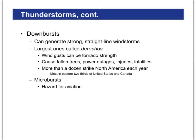A derecho — which I believe is a Spanish word referring to a straight line — is a line of thunderclouds that drop rain all at once. We have things called downbursts, where as all this rain drops out of the sky at once, it can produce some pretty high wind gusts resulting in fallen trees and power outages. These are just another variety of thunderstorms. There are also microbursts, but they only really affect people that are in planes.